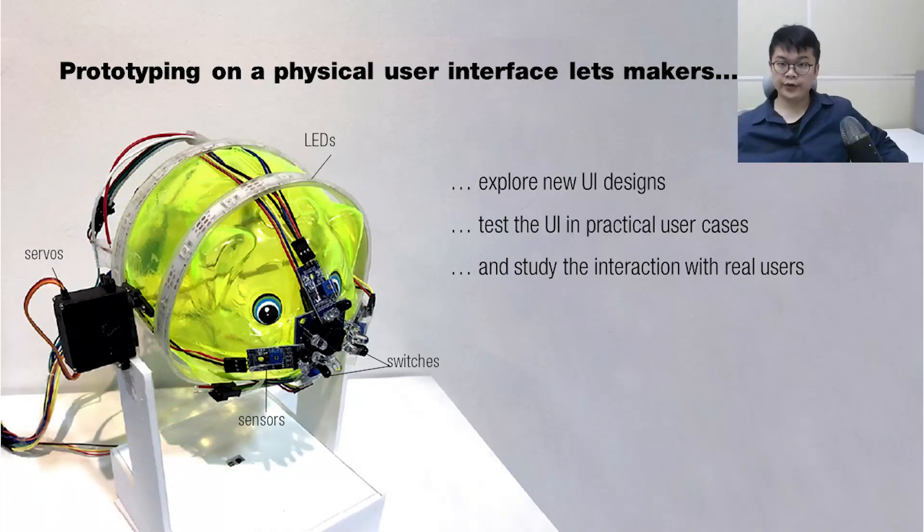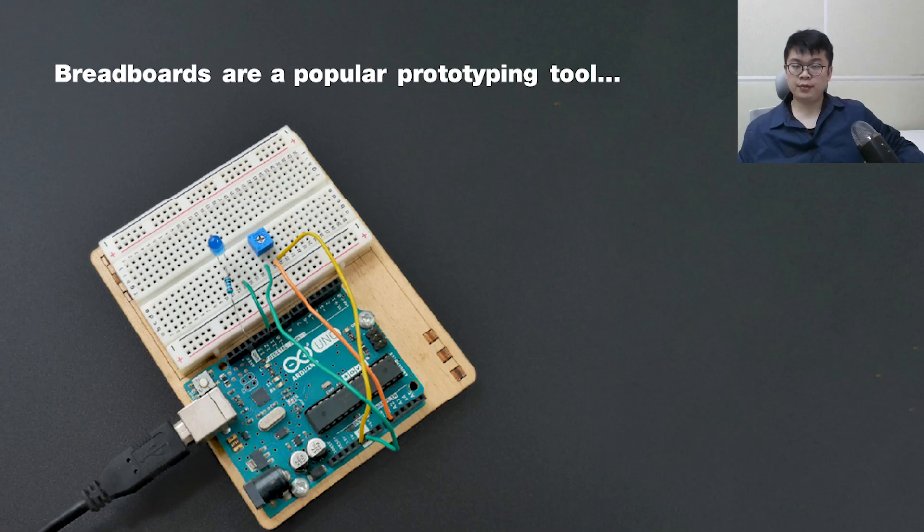In summary, interaction prototyping directly on the physical user interface let makers and designers explore new user interface design and test them in practical use cases with real users. However, as you can see in the example on the left, the traditional method for testing interactive components is to attach them with glue and long wire on the prototype which make them hard to relocate and quickly go through multiple design iterations.